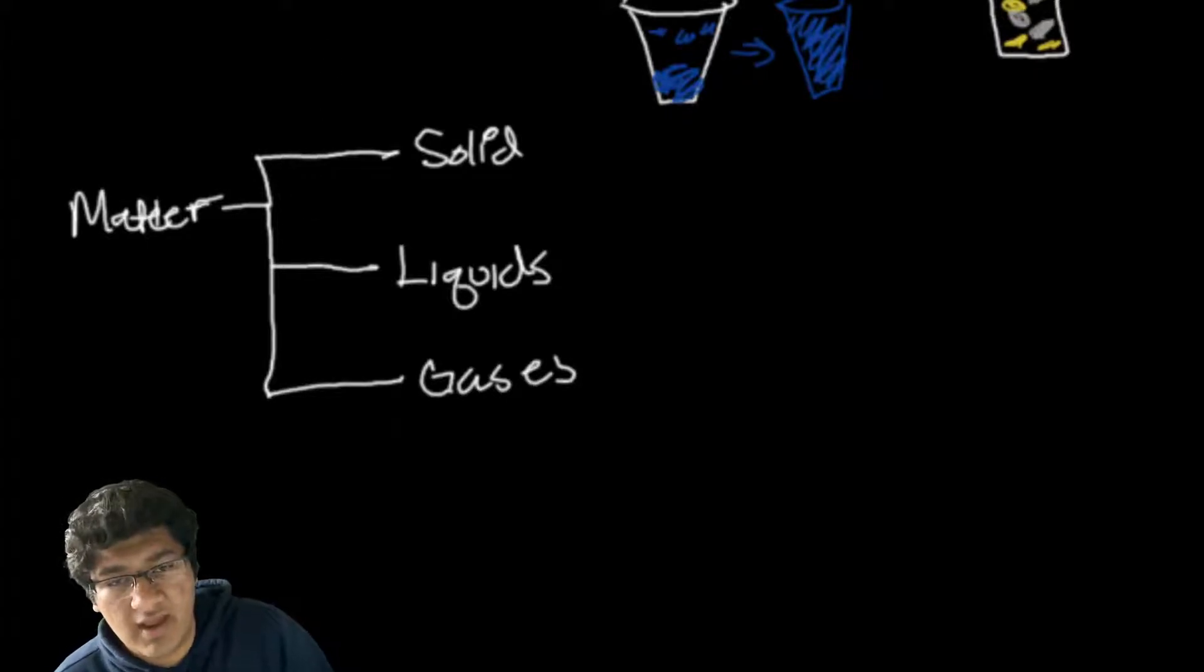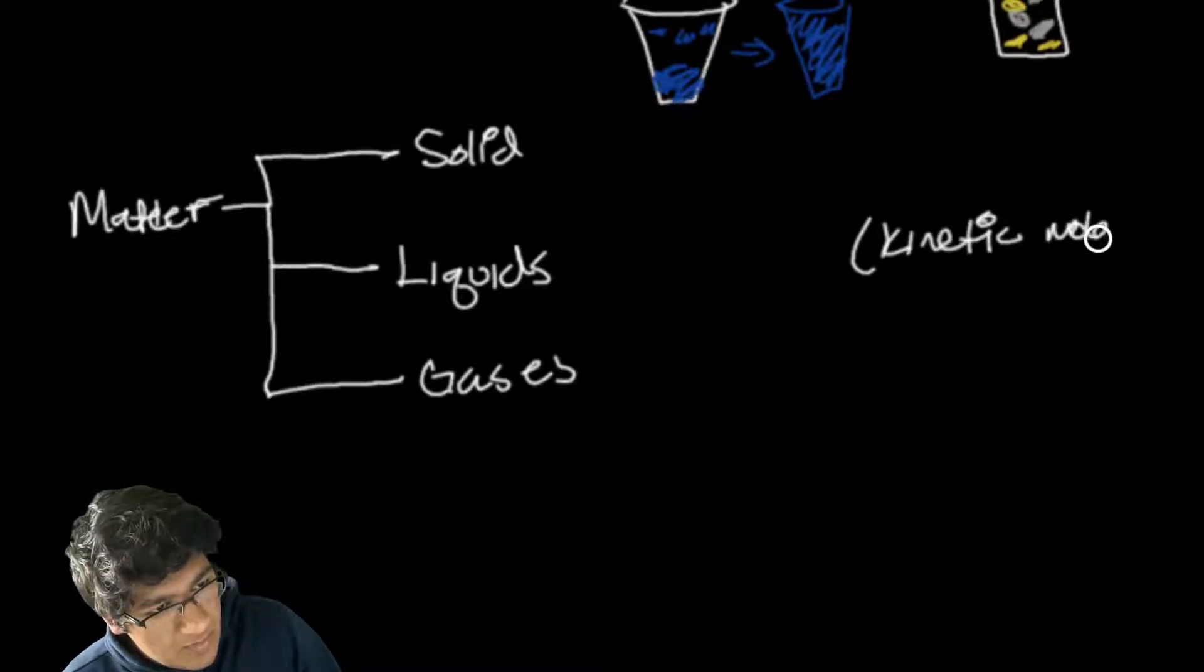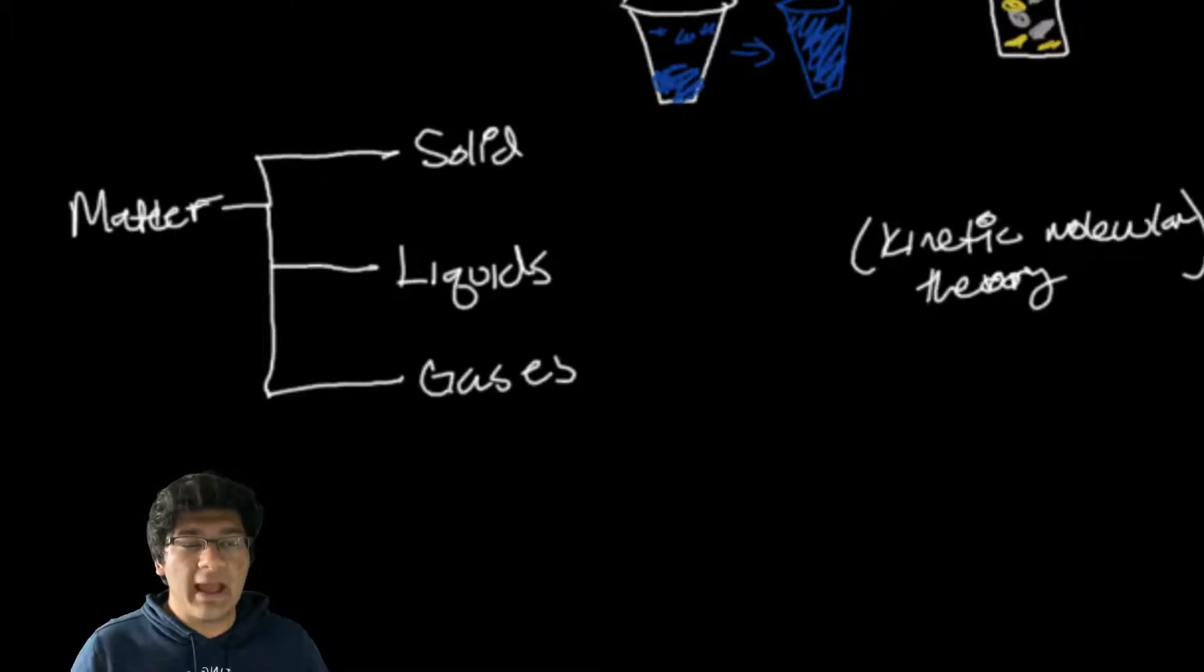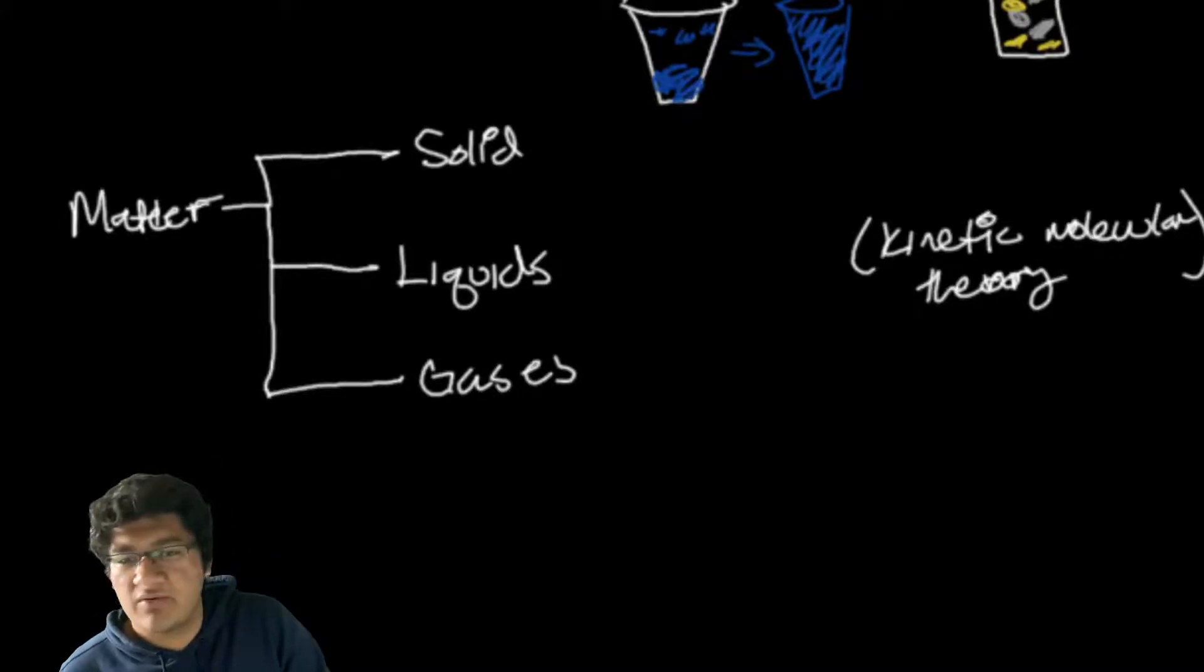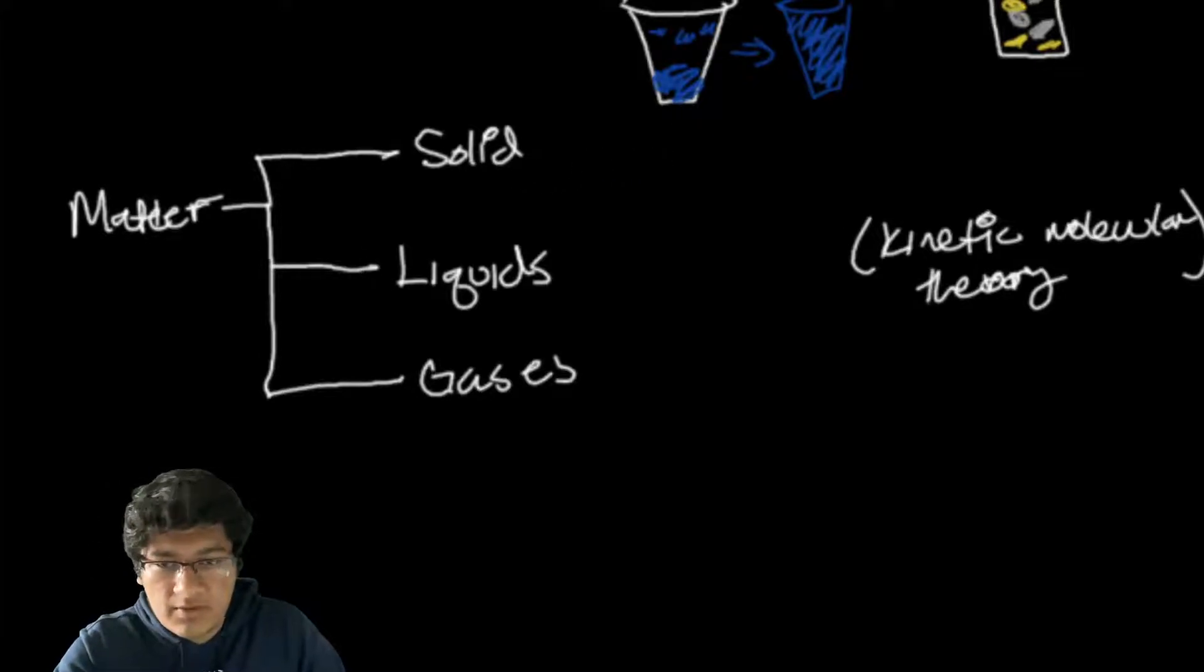These are joined together through something known as the kinetic molecular theory. What this theory states is that the state of matter of a substance can be determined by the activity or excitement of the particles that make it up.